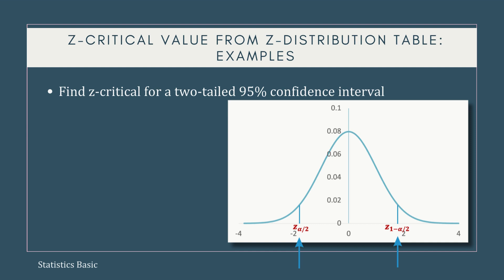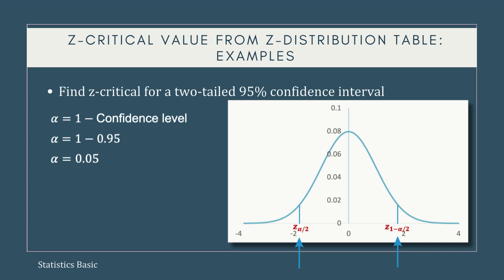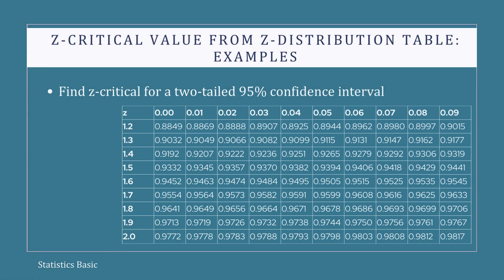For a 95% confidence interval, the significance level is 1 minus the confidence level, that is 1 minus 0.95. The lower critical value is z0.025 and the upper critical value is z0.975. This means, in the z-distribution table, we have to calculate the z-critical value for alpha equals 0.975. In the z-distribution table, locate the cell for the cumulative probability of 0.9750. The row and the column corresponding to the selected cell provide the z-critical value.